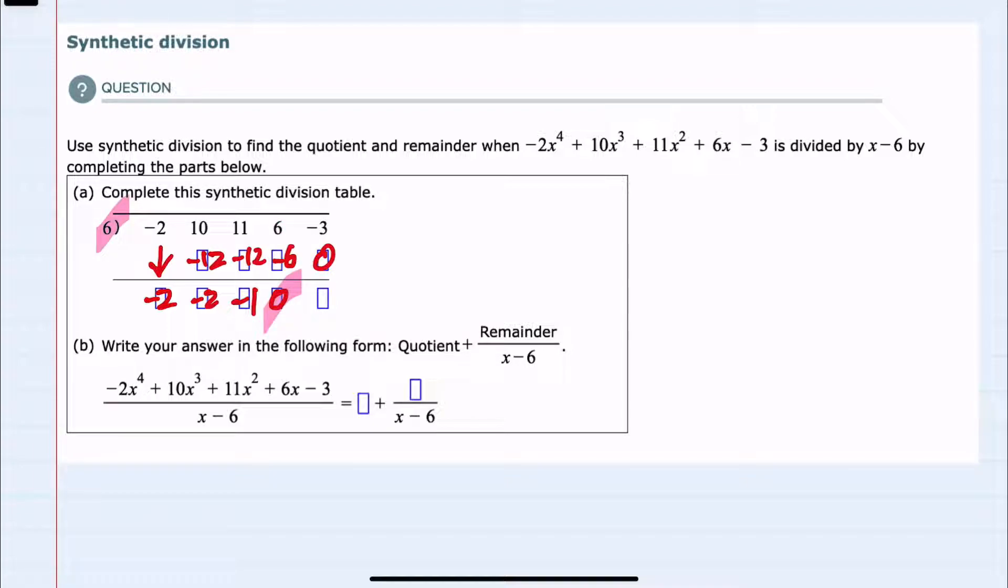Multiplying again, 6 times 0 this time is a 0, and here when we add negative 3 and 0 we get negative 3. At this point we have completed the synthetic division, but for part b we're asked to rewrite this in the form quotient plus remainder over x minus 6.